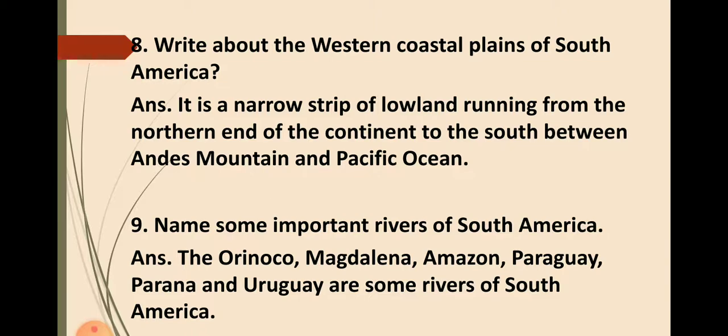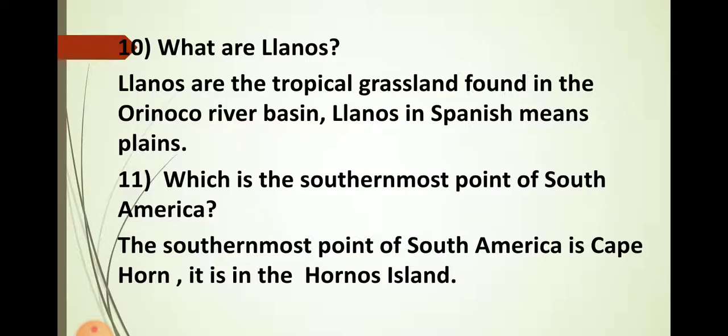Question number nine: Name some important rivers of South America. The Orinoco, the Magdalena, Amazon, Paraguay, Parana, and Uruguay are some rivers of South America. Question number ten: What are llanos? Llanos are the tropical grasslands found in the Orinoco river basin. Llanos in Spanish means plains.